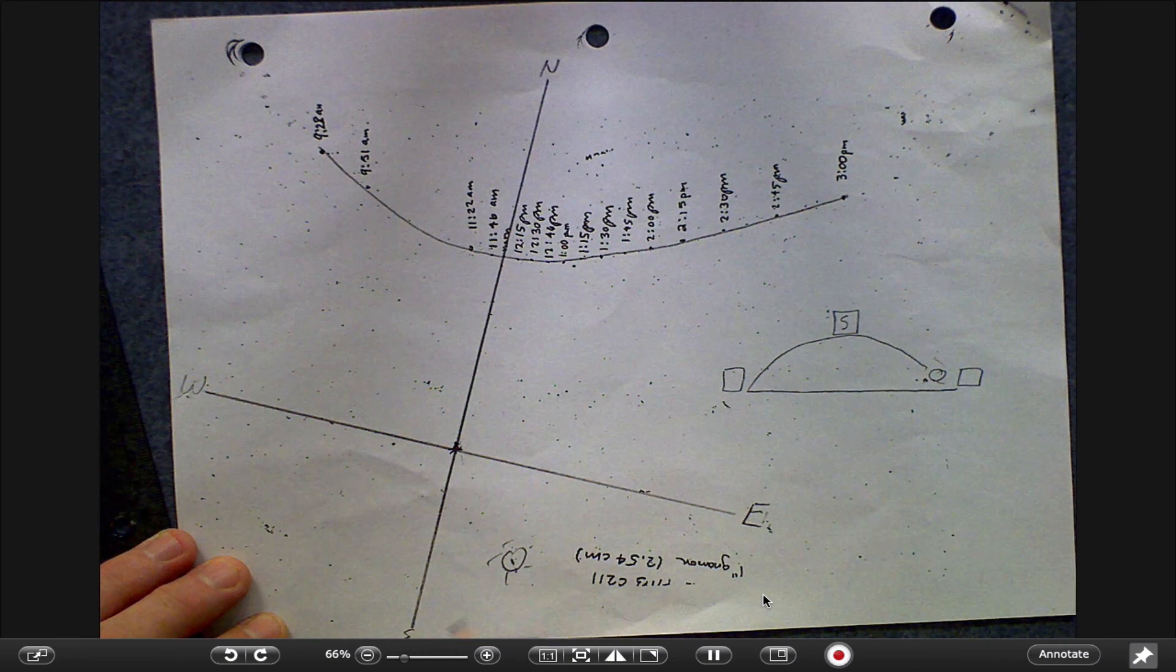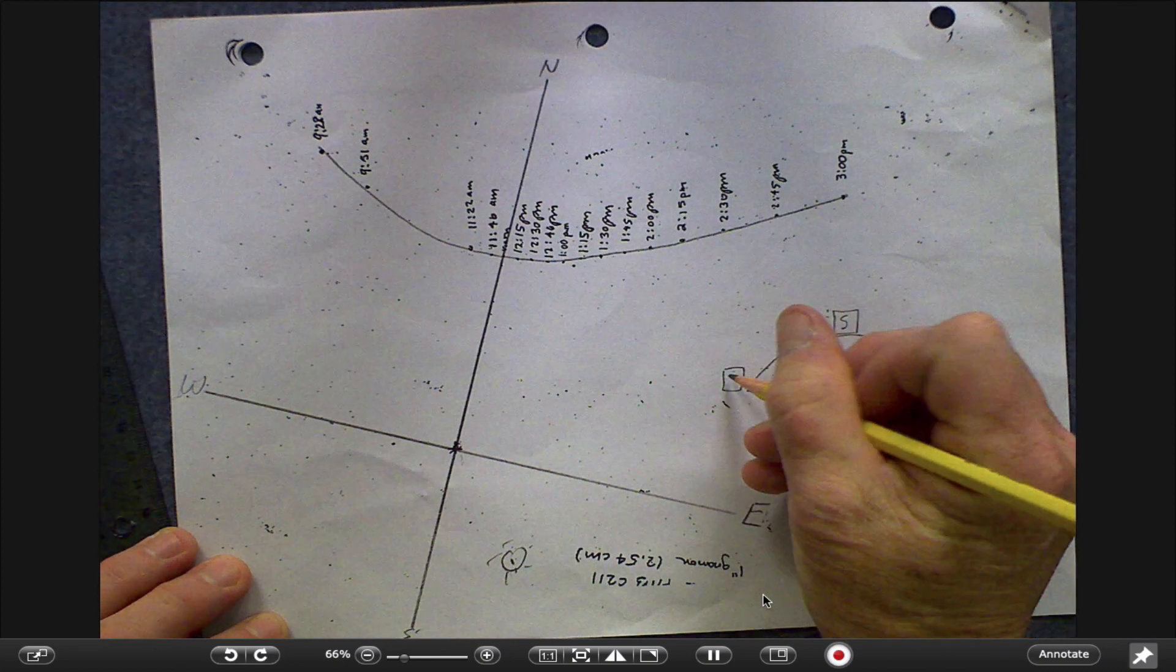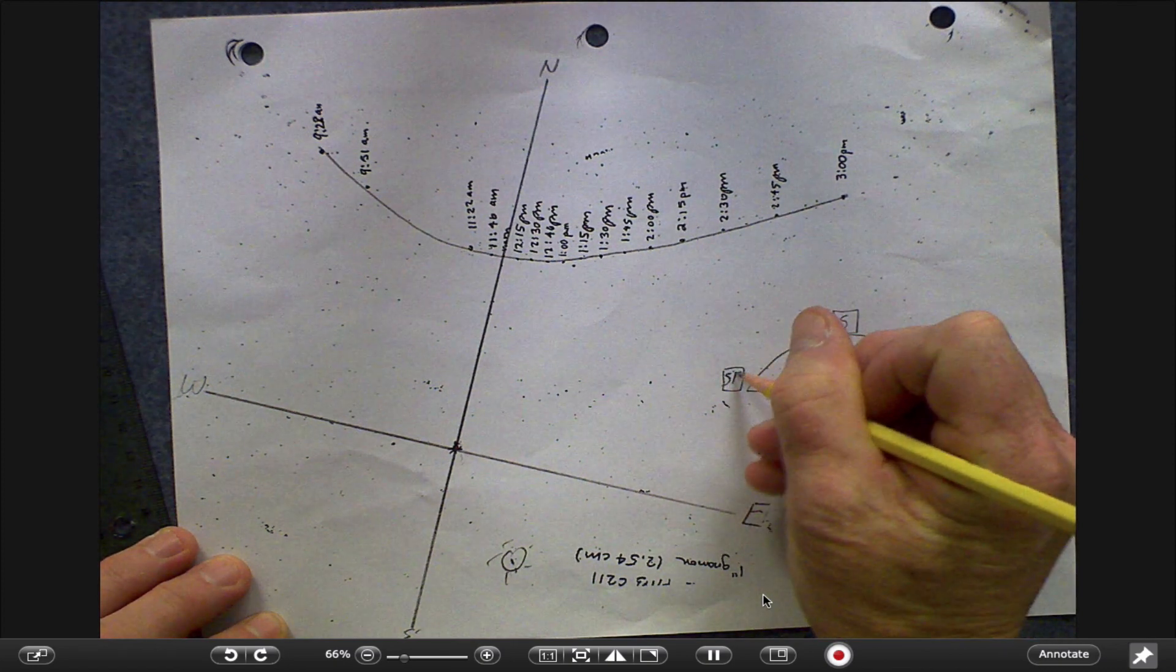And this part of the sky is the southeastern portion of the sky. So we have sunrise in the southeast.